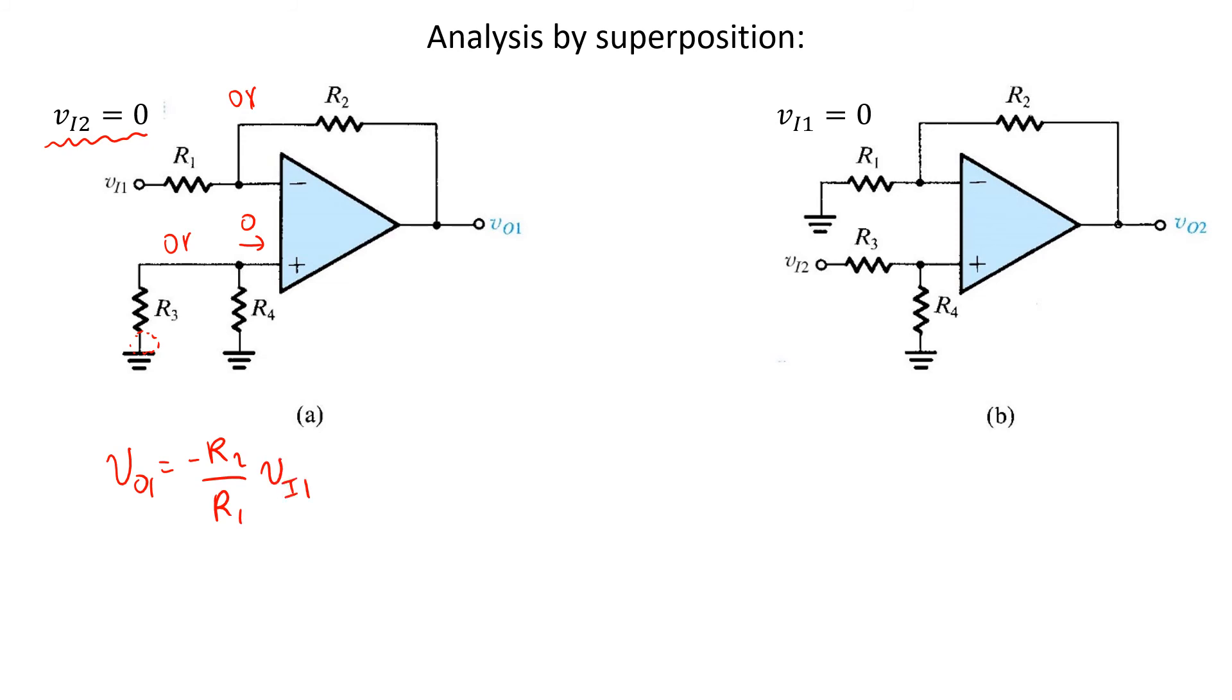Over here on the right, we consider the equivalent circuit when VI1 is set equal to zero. VI1 normally being located there. And in this case, again, we've got our resistive voltage divider here. That ensures V plus is R4 over R3 plus R4 times VI2.